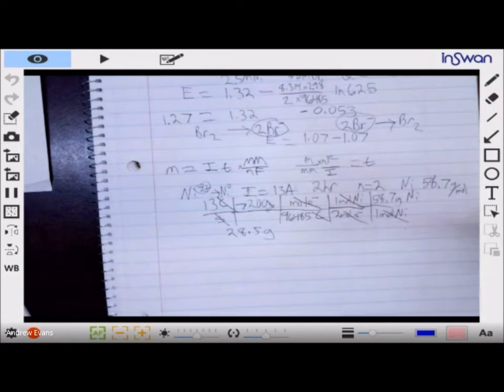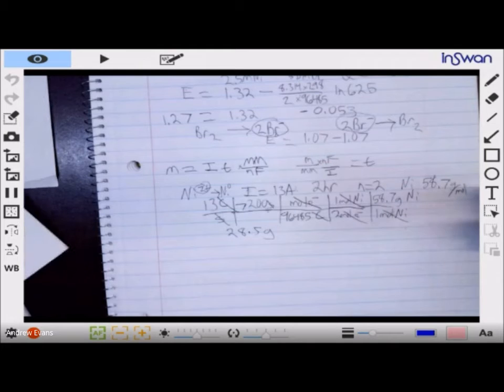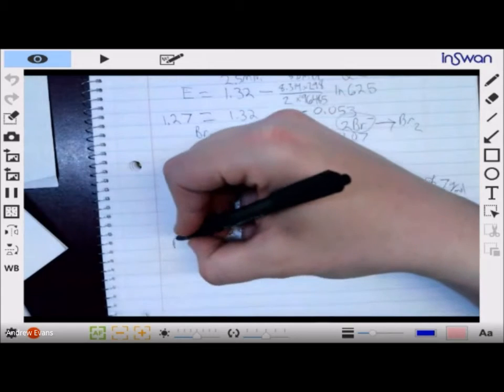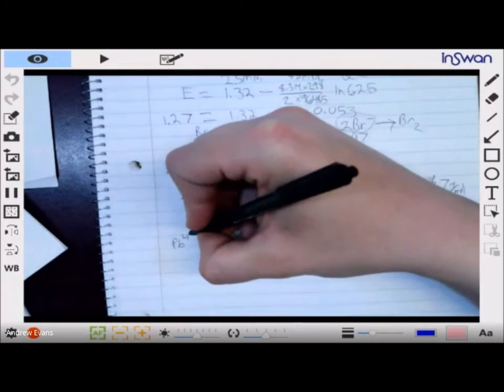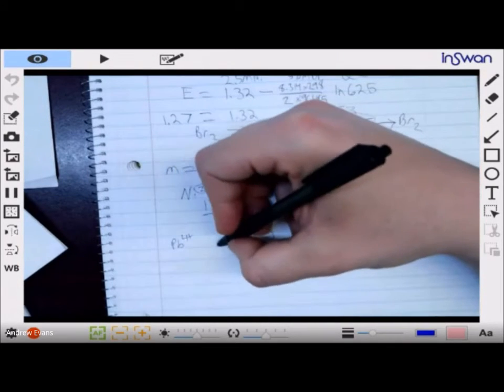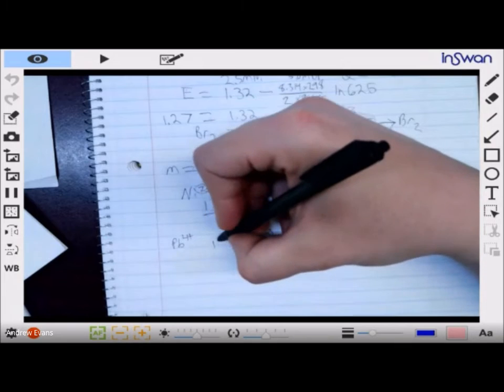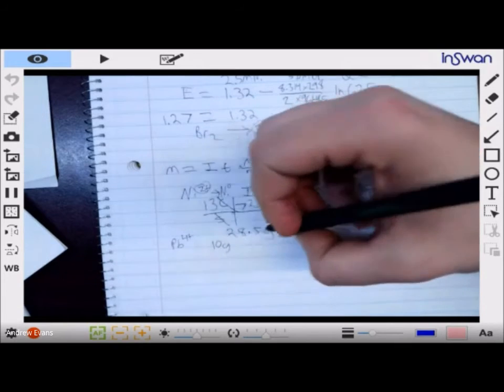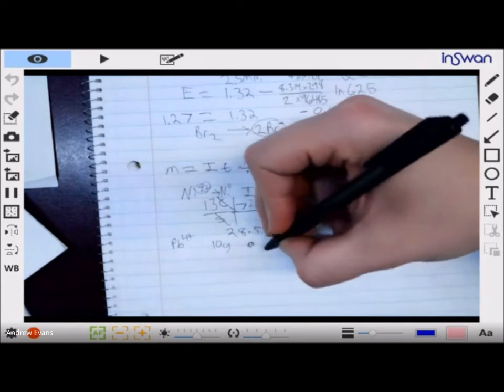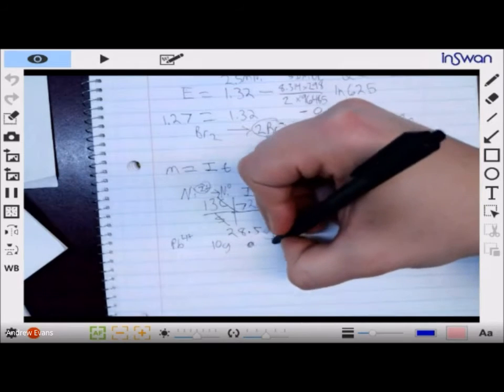If I want to know, how much lead 4 could be electroplated? Well, how long does it take to electroplate 10 grams of lead 4 at a current of 5 amps? So, what's our time?